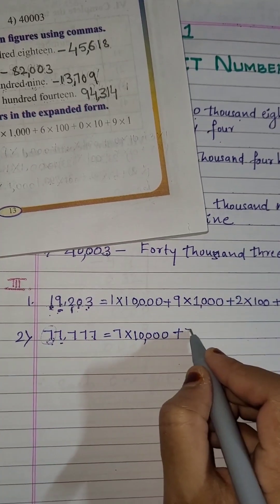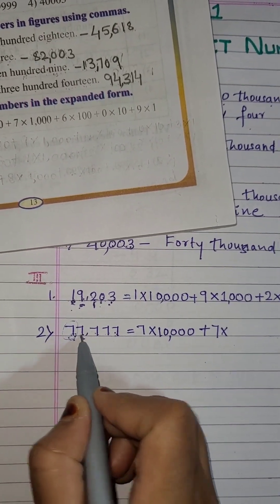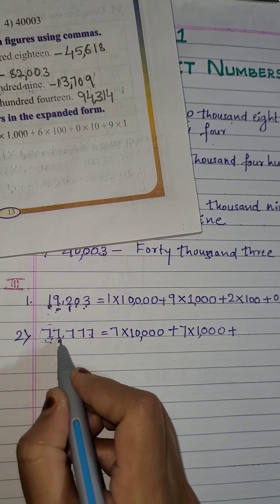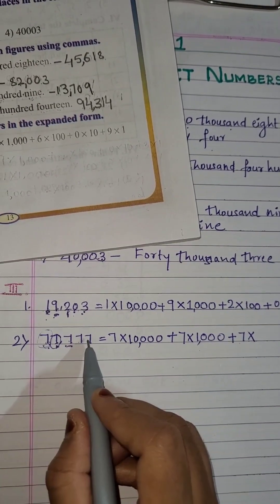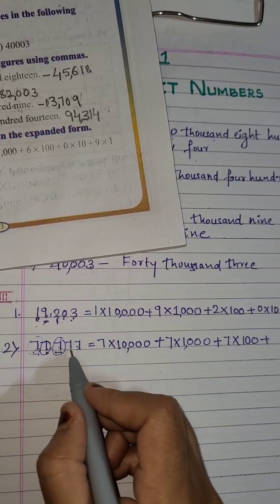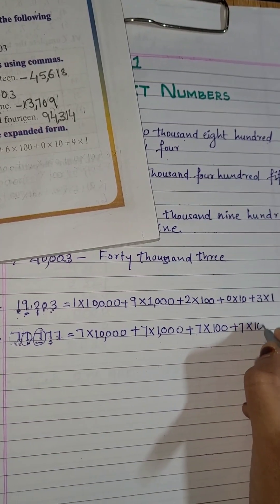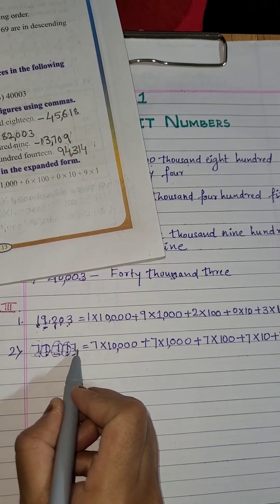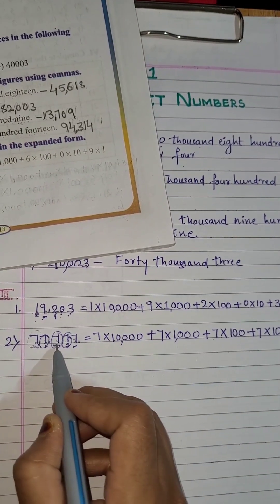Now come to the next number. So 7 into — in which place is this 7? Unit, 10, 100, 1000. So I will write 1000. Then put the comma, then again plus. Next, this 7 into — it is in the 100 place. So 100, then plus. Now this 7 into — it is in the 10 place. So 10, plus. And last 7 — what is the place of this 7? It is unit. So into 1. This is the expanded form of 77,777.